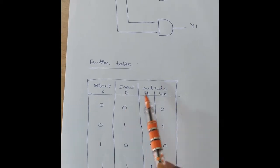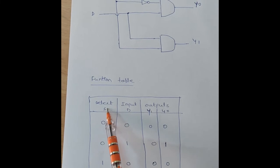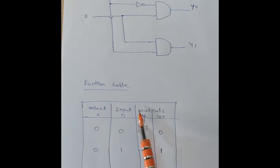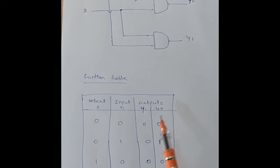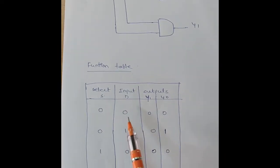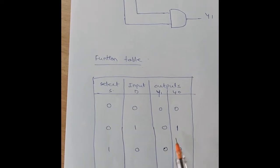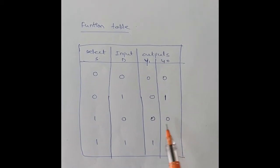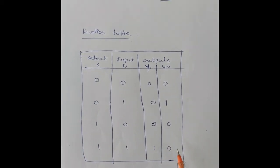This is the function table of the one-to-two D demultiplexer. S is the selection line, D is the input, and the outputs are Y0 and Y1. The four input combinations are: S=0,D=0 → outputs 0,0; S=0,D=1 → outputs 1,0; S=1,D=0 → outputs 0,0; S=1,D=1 → outputs 0,1.